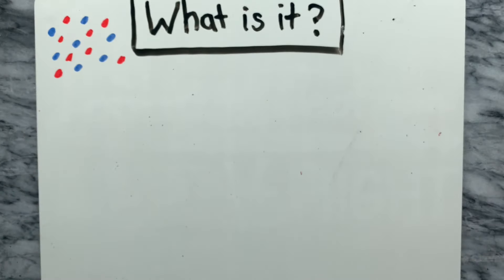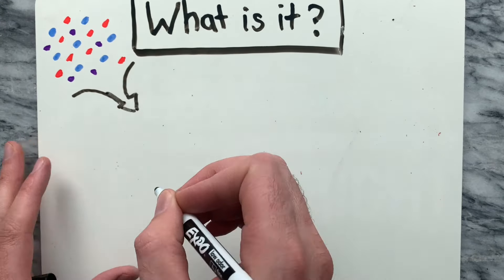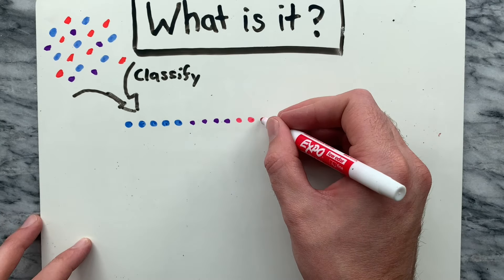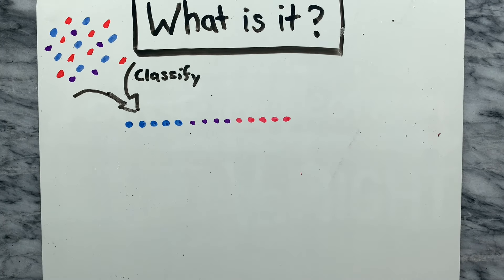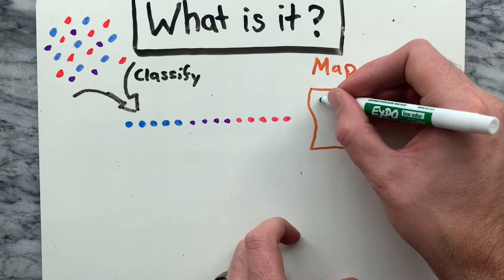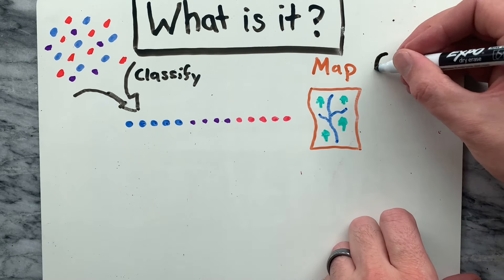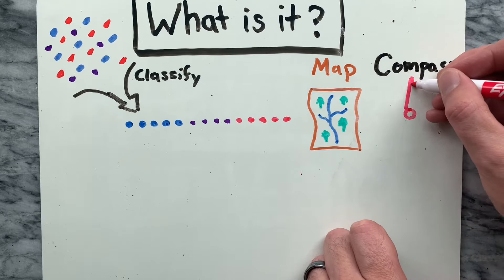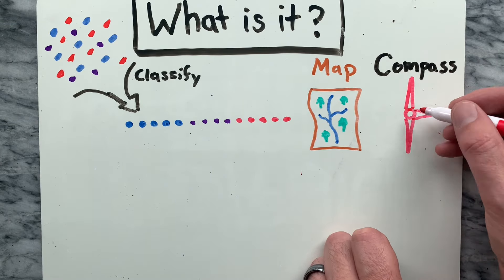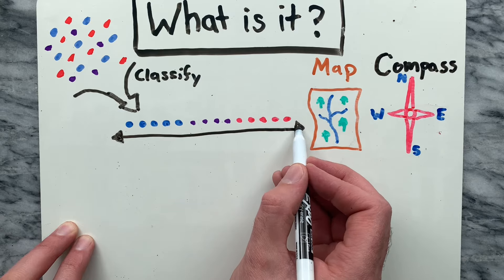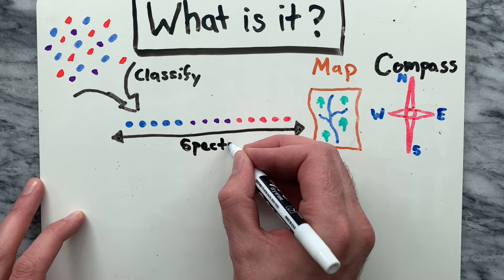A political spectrum is a way to describe and classify different political ideologies in relation to one another. These positions can be mapped out on a single geometric axis or two-dimensional axes to help represent and describe different political ideologies. You can think of it kind of like a map or a compass. Keep in mind, there are several versions that exist out there. One of the most common is the left-to-right spectrum.